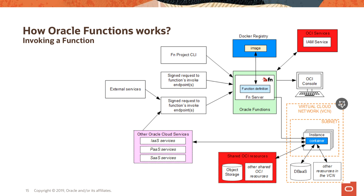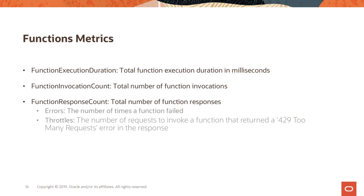The final topic in part two is function metrics. There are four useful metrics automatically collected from the Functions service, accessible as charts in the OCI console: total execution duration in milliseconds, invocation count (how many times a function was invoked), the number of errors (how many times a function failed), and throttles — the number of requests that returned a 429 'too many requests' error code.